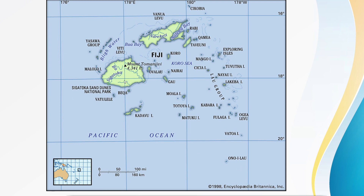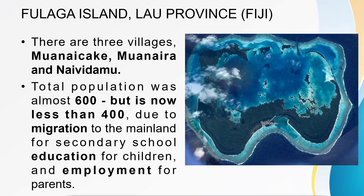This is a map of Fiji, and that's Fulanga over there. I'm saying Bula to all the children and parents from Fulanga Island in Laos. This is a picture of Fulanga, with the villages Mwanaidhake, Mwanaira, and Naibindamu. There is a population of between 400 and 600 people on the island.